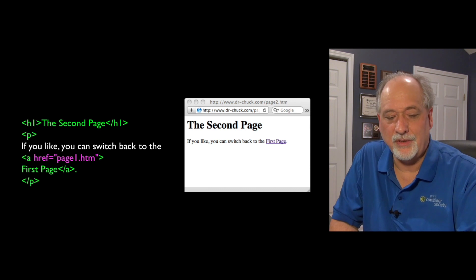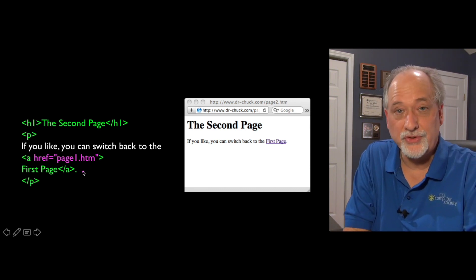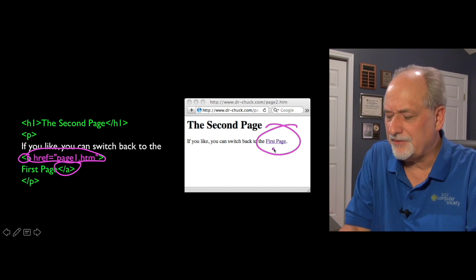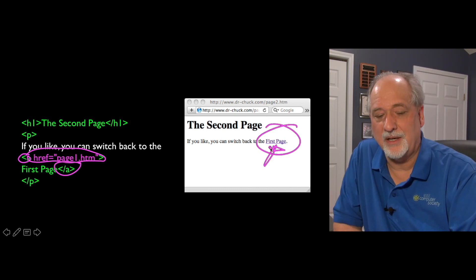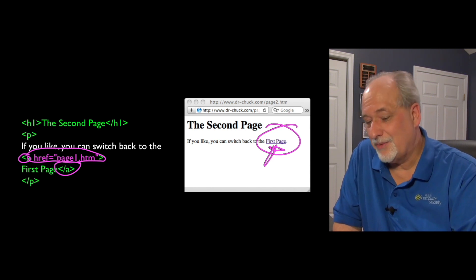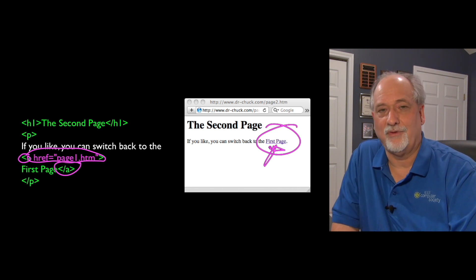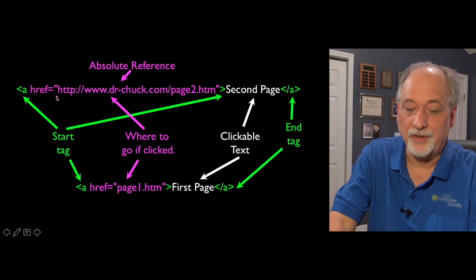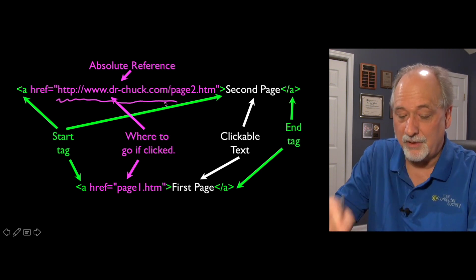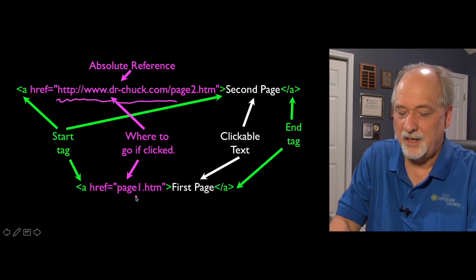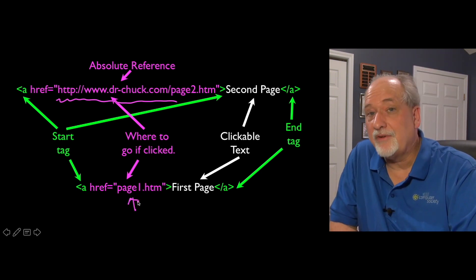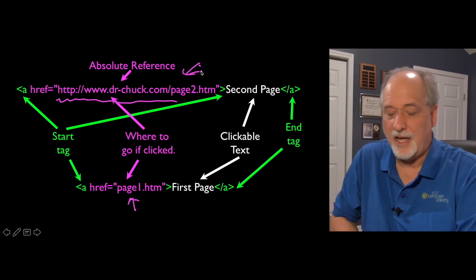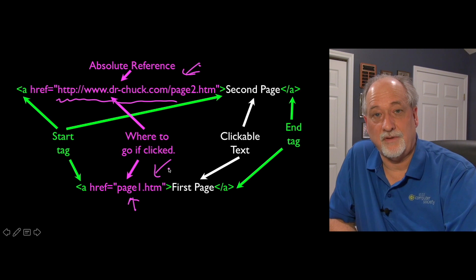That was an absolute link. With a relative link, we assume we're in the same folder on the server — the href just contains a filename like page1.htm, and you'll notice that's a purple link because I've already been there. Absolute references start with HTTP or HTTPS; relative references don't. A relative reference like page1.htm means that file must be in the same folder as the currently viewed file on the same server. To switch folders or servers you need absolute references.